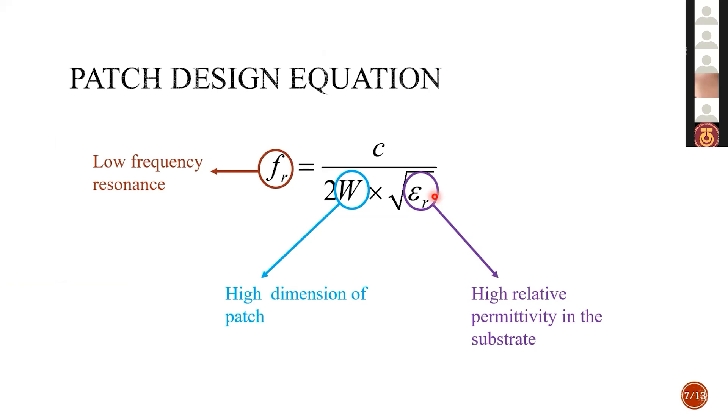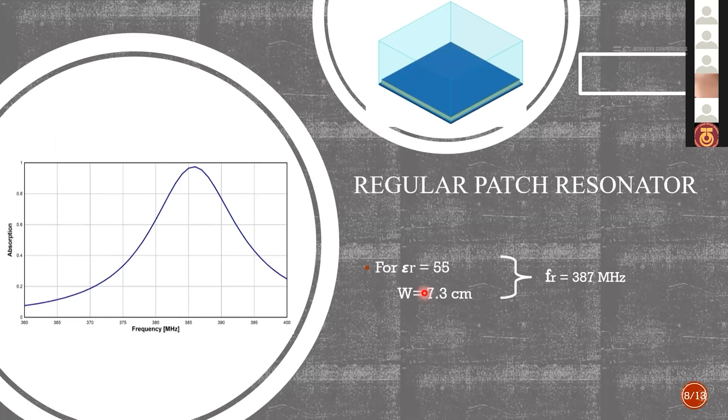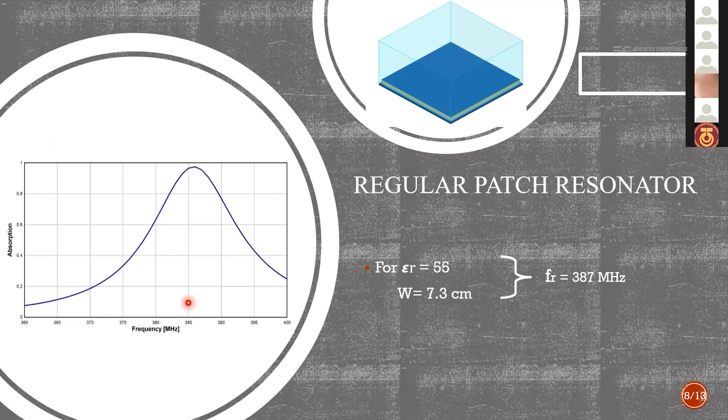If these requirements are applied now in this model, this is a regular patch resonator. Applying the substrate to be with the dielectric permittivity of 55 and the W dimension of the patch is 7.3 centimeters. This model has obtained a resonant frequency in 387 megahertz, as we show in this figure. The regular patch without any additional roughness let our dimension to be lambda over 10.6.